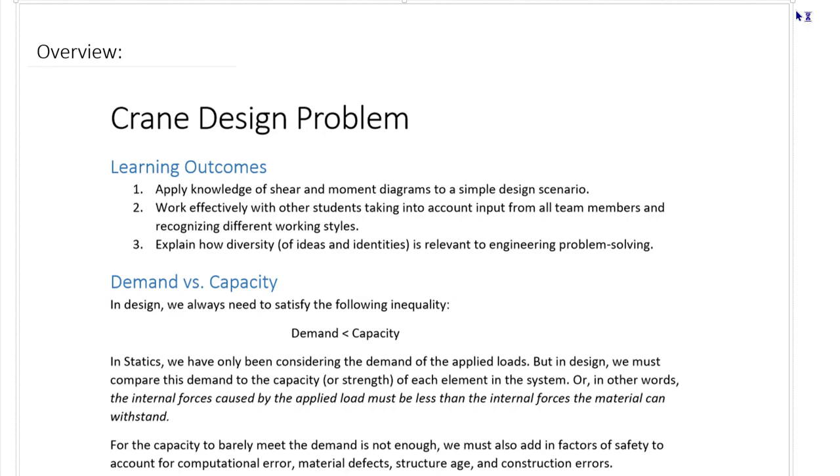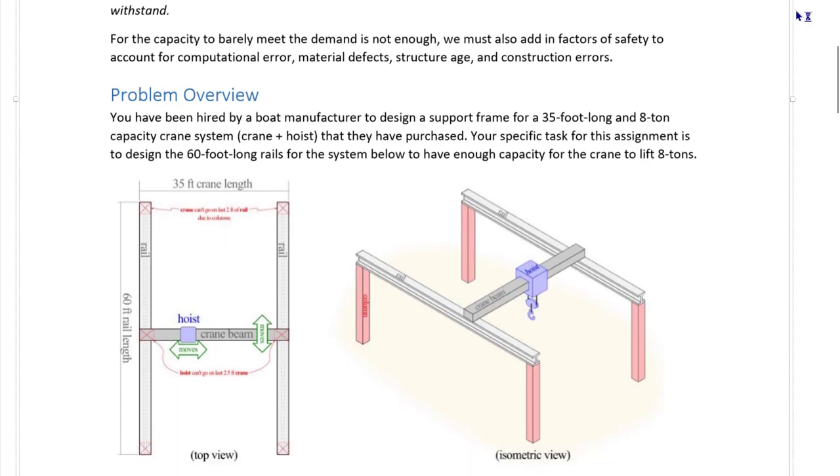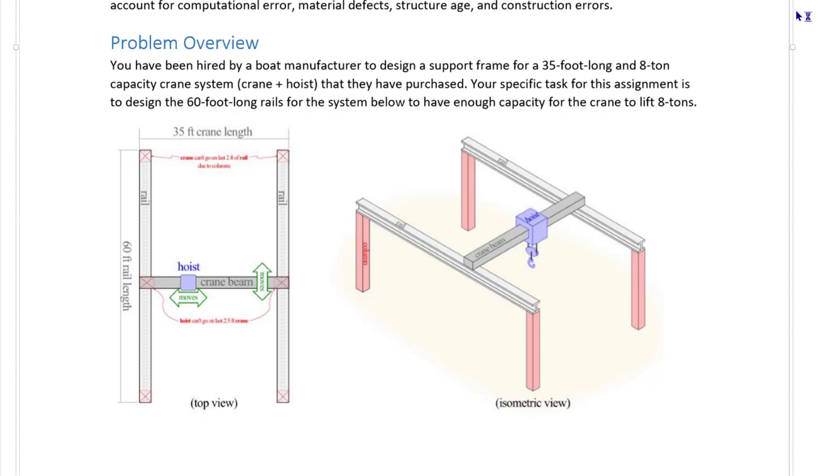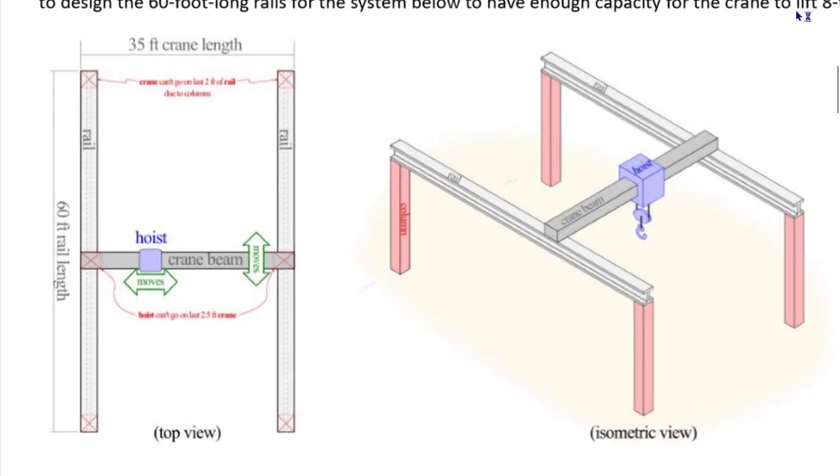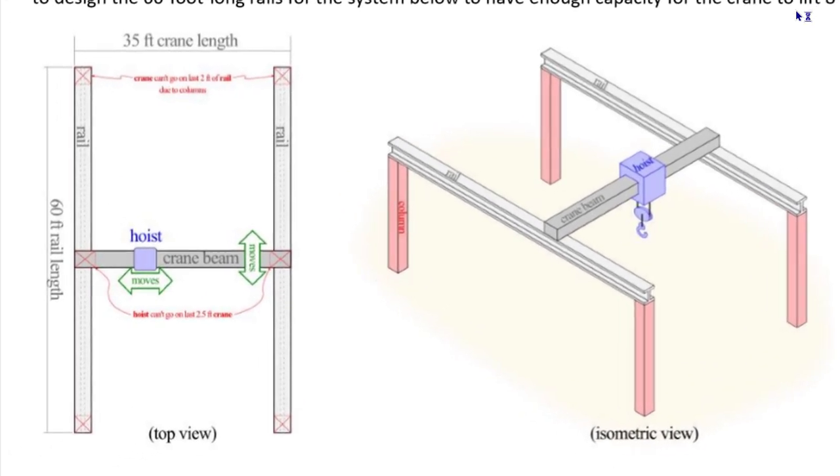The idea is that we're going to not only figure out how much load is on a beam, but also physically size that beam so it can hold the load. There's a whole PDF with all the details, but to give you a quick overview: you've been asked by a client who has a boat building shop. They've bought a crane and hoist system with a 35-foot span. The hoist can move left and right along the crane beam.